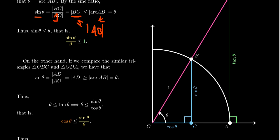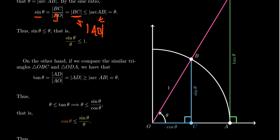Dividing both sides of the inequality by theta — theta is positive since we're in the first quadrant — dividing by theta won't flip the inequality. We get the important observation that sine of theta over theta is less than or equal to 1. Remember, we're trying to show the limit as theta approaches 0 of sine theta over theta equals 1. In this squeeze theorem argument, yellow is the function in the middle, green is the right bound — which is 1 — and orange will be the left bound, which we'll see in just a moment.